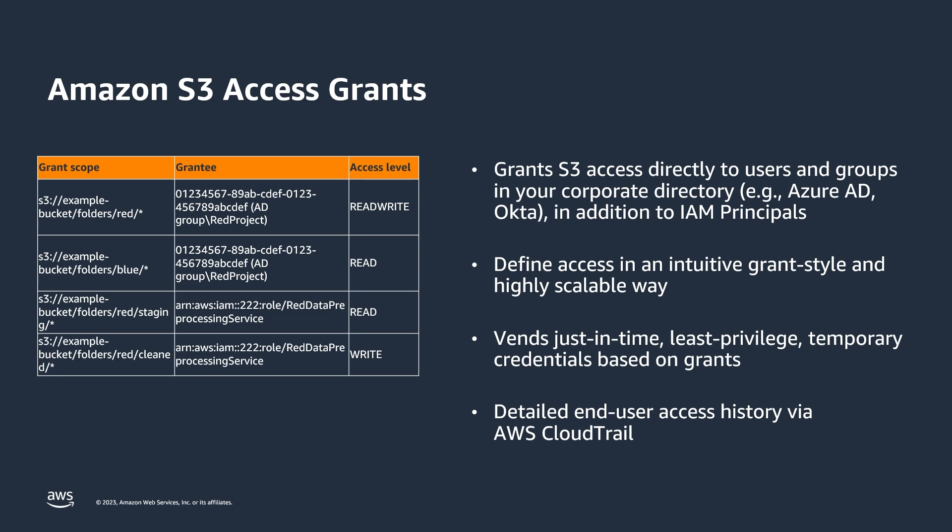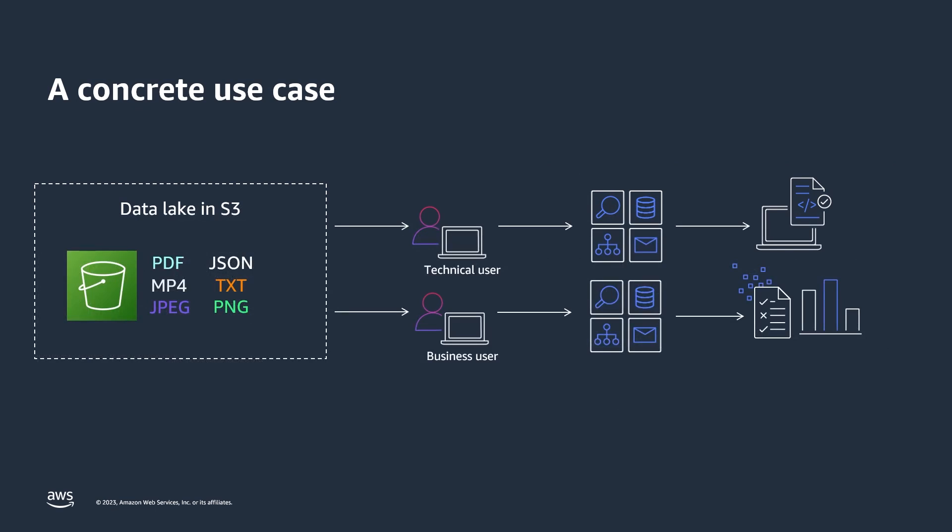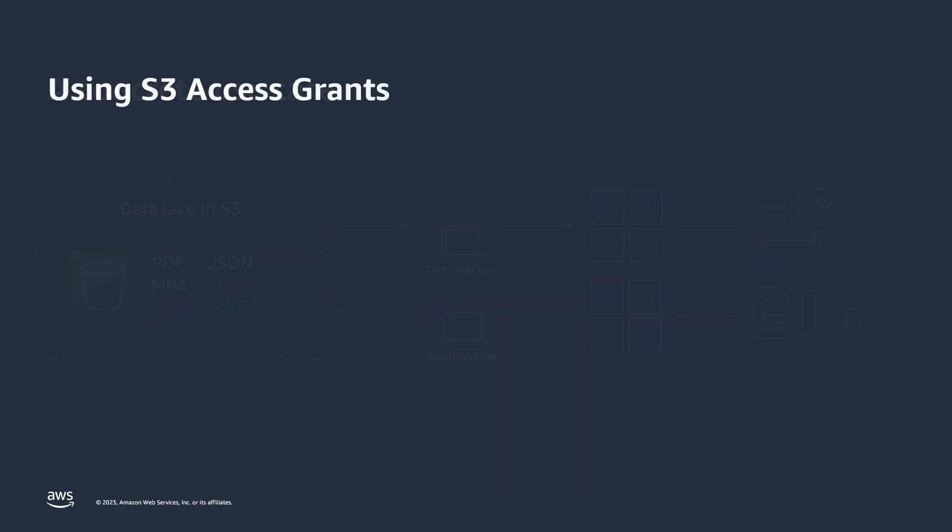Now let's walk through a quick use case to see S3 Access Grants in action. What we're showing here is a very high-level and typical use case for S3, especially for analytic data lakes, where you have a bucket that's your centralized data lake storing a variety of different objects and data — some might be PDFs, some JSON like broad logs, text files for training machine learning models, or JPEG and PNG files for training computer vision models. On one side you have your data lake with the data assets you want to control access to. On the other side you're serving different user personas: technical users like data scientists and data engineers who can write code, and business users who want a more intuitive interface to pull data from S3.